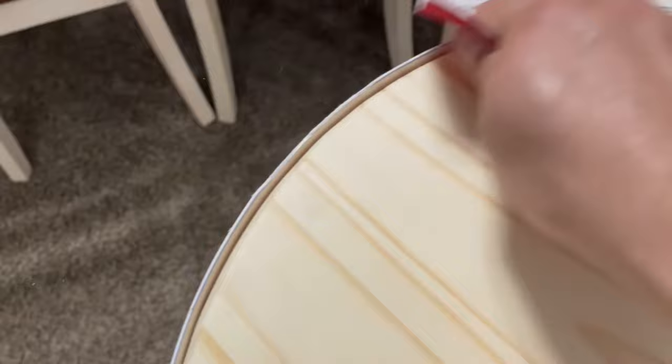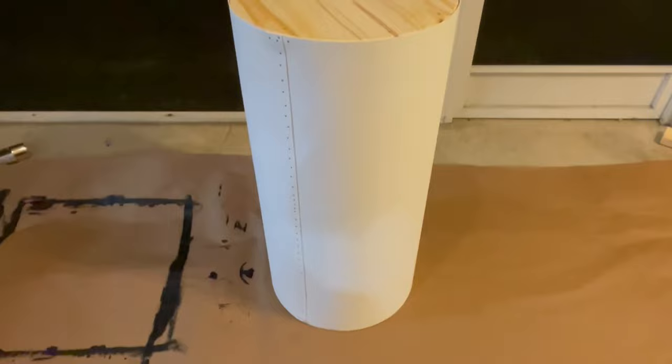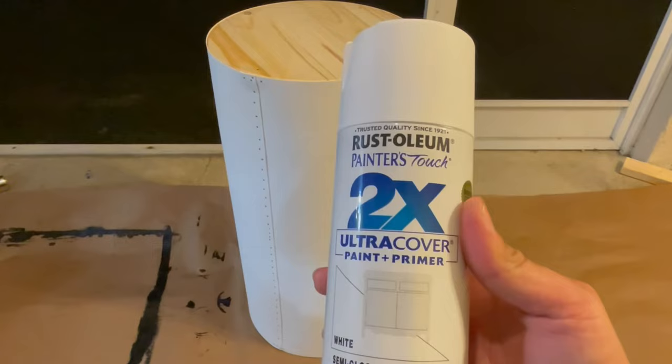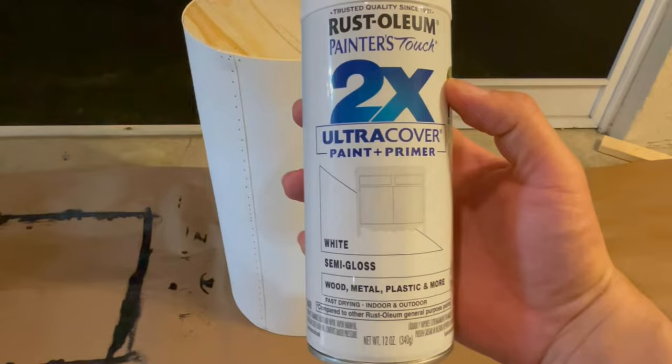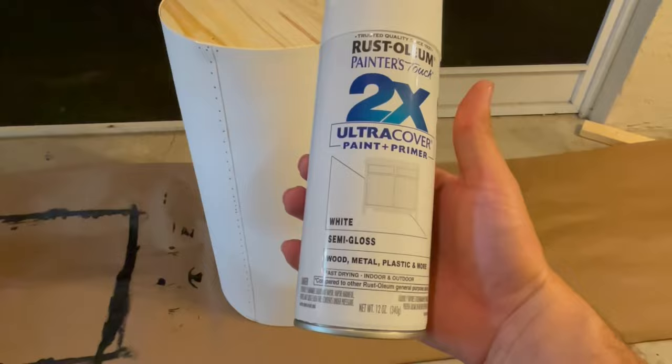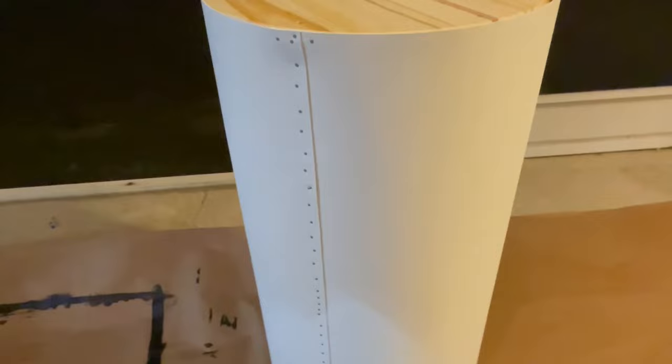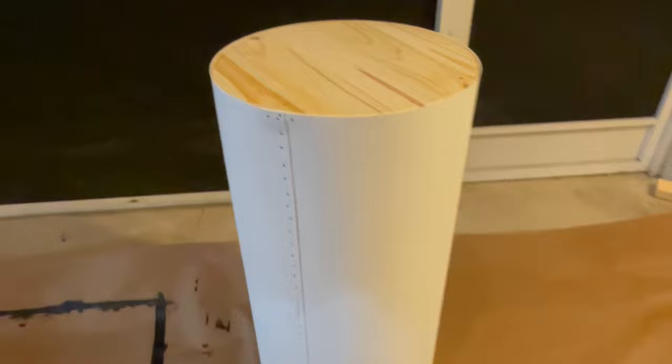All right guys, so here we are outside, we're ready to paint. For the paint we're going to use the good old Rust-Oleum. We want to use white obviously with semi-gloss because it makes it easier to clean after every event. You gotta love semi-gloss. As you can tell I added more nails. I want to make sure this thing is secure. We're going to go ahead and paint that and don't worry about the nails. Once we get that paint on there you barely see it.